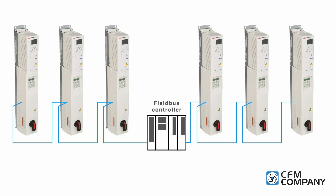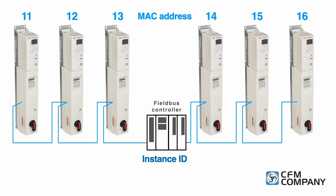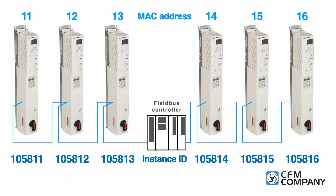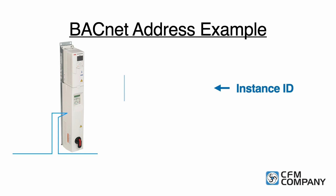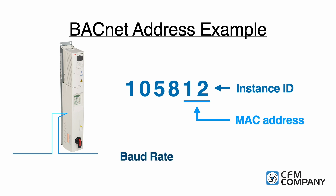Each device on the network needs to have a unique MAC address and instance ID. Ask the building automation contractor for a list of addresses for all the drives on the project. You will also need to know the network baud rate. For this video, we will use the instance ID of 105,812, where the last two digits of the instance ID is also the MAC address. The network baud rate will be 76.8 kilobits per second.